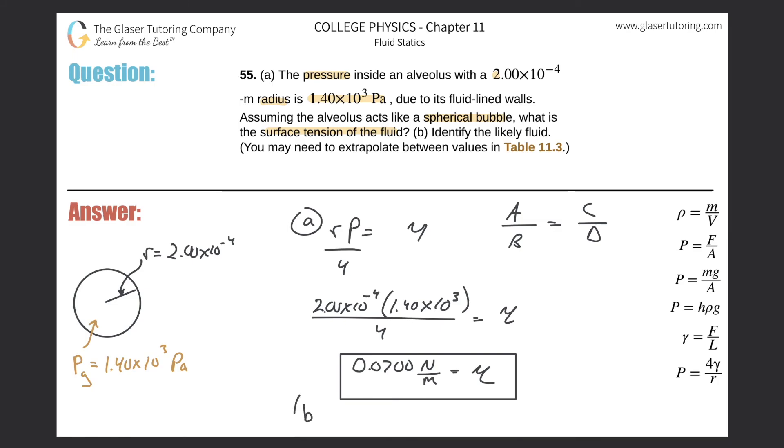So that takes care of letter A. And then letter B, it says, what is this most likely to be? So you got to reference your tables. If you look through it, you're probably going to realize this is closest to that of water. So hopefully that suffices. Thanks so much for tuning in. We appreciate it very much. Please remember to subscribe, and we'll see you next time. Take care.